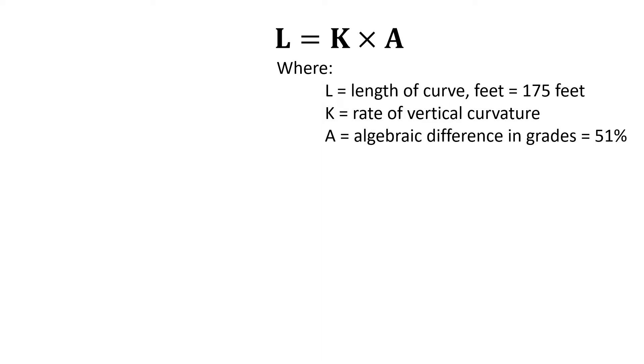Our key equation for vertical curves is L equals K times A, where L is the length of the curve, K is the rate of vertical curvature, and A is that algebraic difference in grades that we discussed.